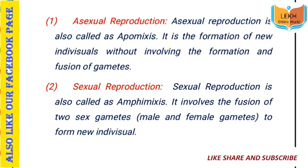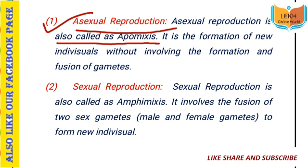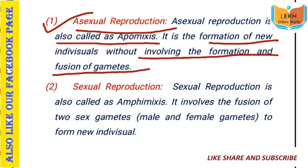Asexual reproduction is also called apomyxis. It is the formation of new individuals without involving the formation and fusion of gametes. So, male and female gametes will not be made and there is no fusion. This is asexual reproduction, and it is called apomyxis.